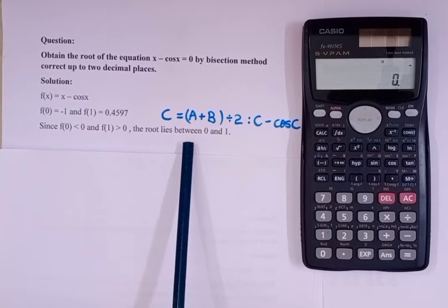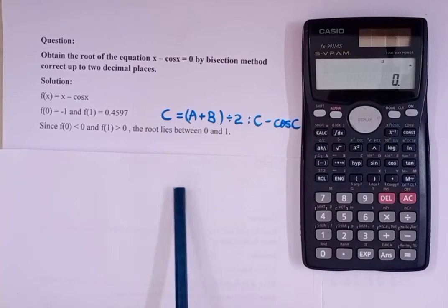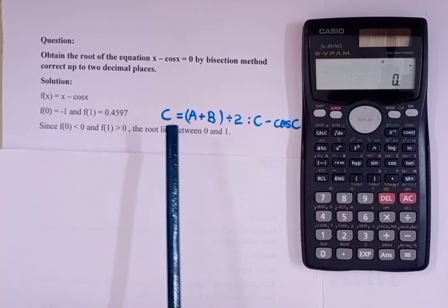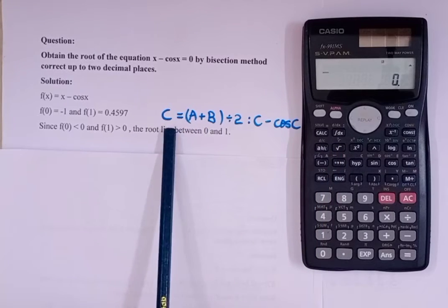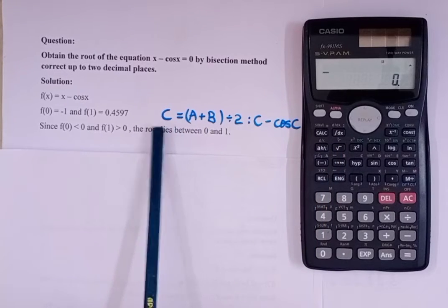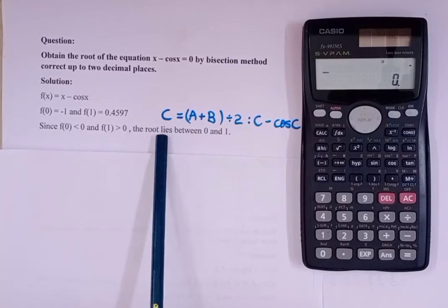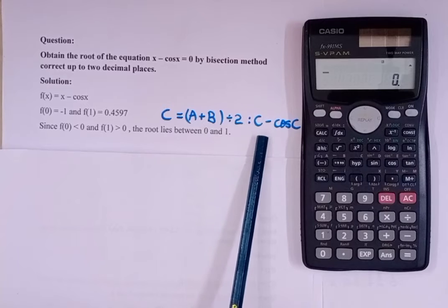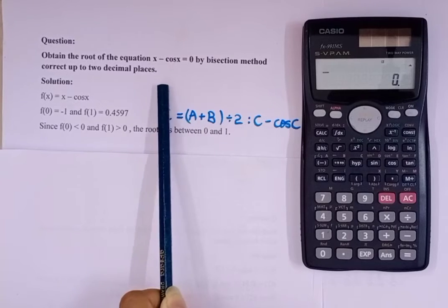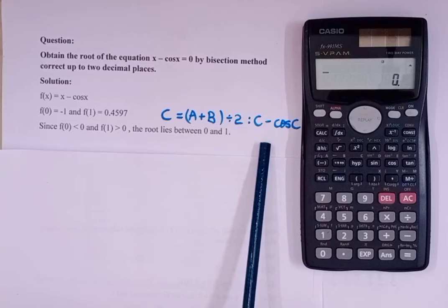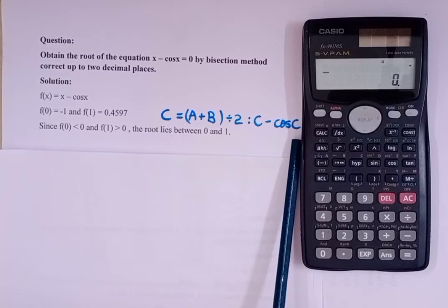As we know, for bisection method the iteration is found using xn = (a + b) / 2. So I'll write c = (a + b) / 2, which represents my xn. And this is x minus cos x, which I am representing as c minus cos c.